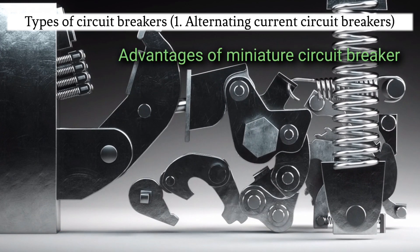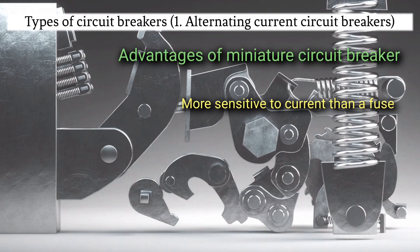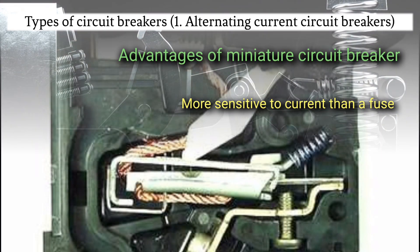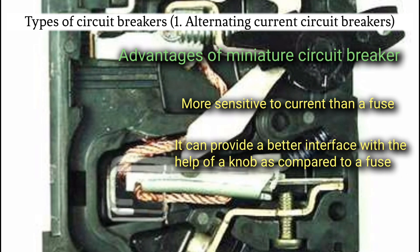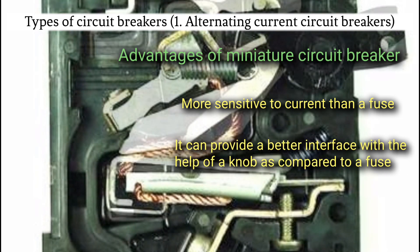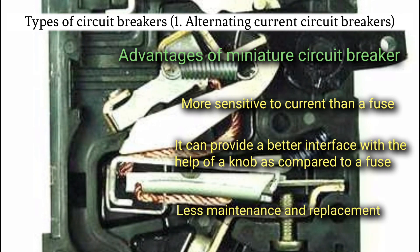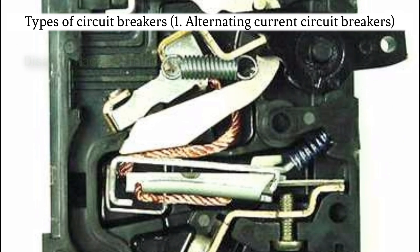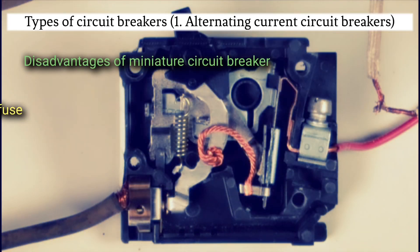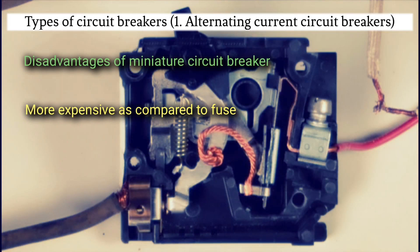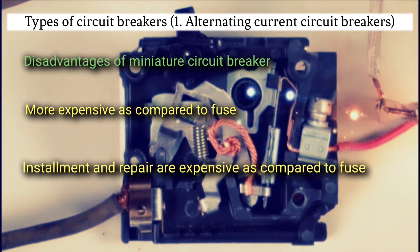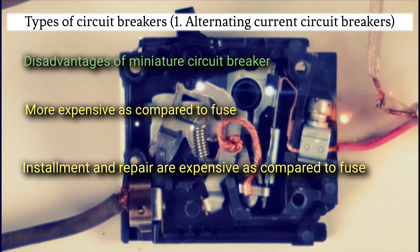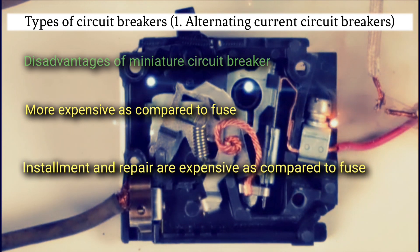Advantages of miniature circuit breaker: more sensitive to current than a fuse; it can provide a better interface with the help of a knob as compared to a fuse; less maintenance and replacement. Disadvantages of miniature circuit breakers: more expensive as compared to fuse; installation and repair are expensive as compared to fuse.